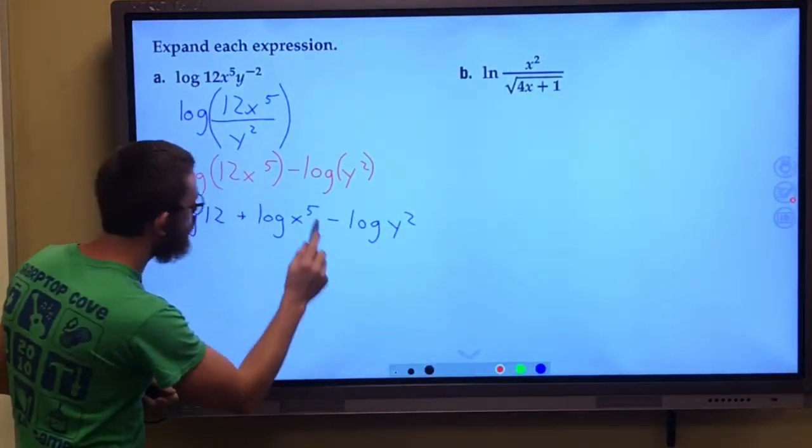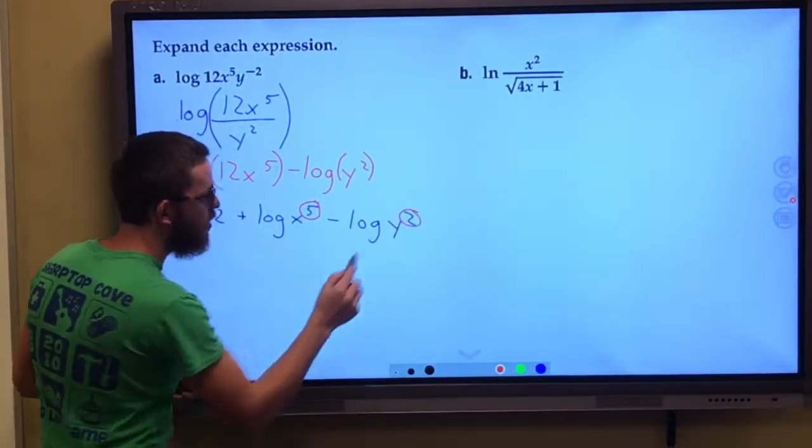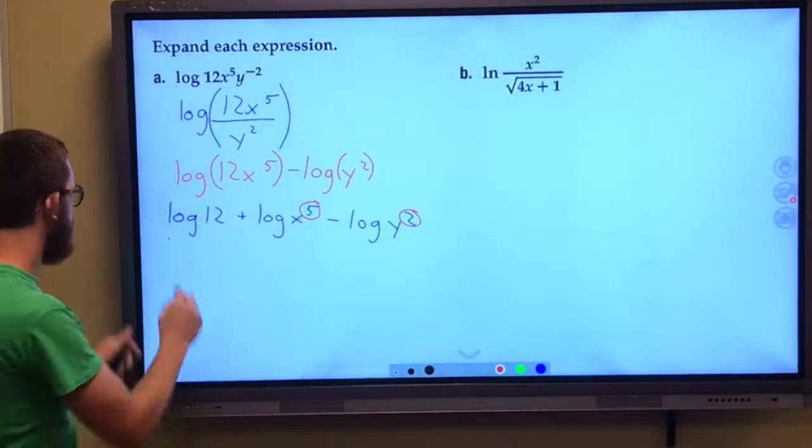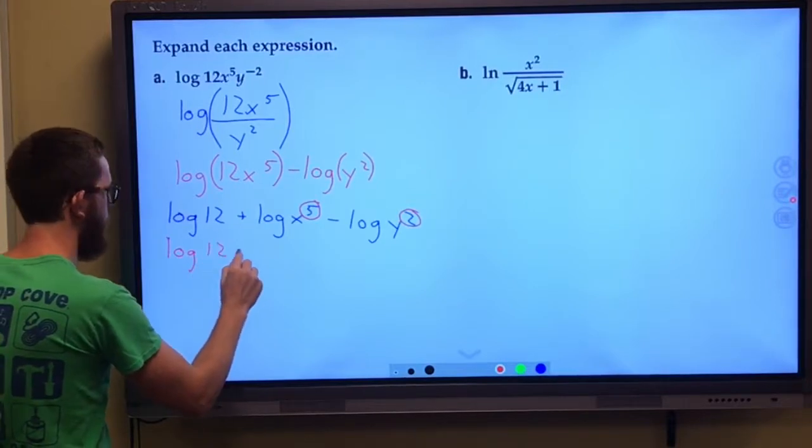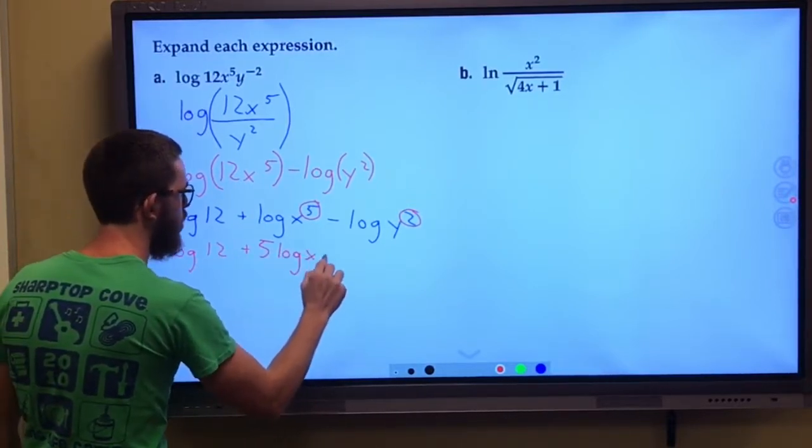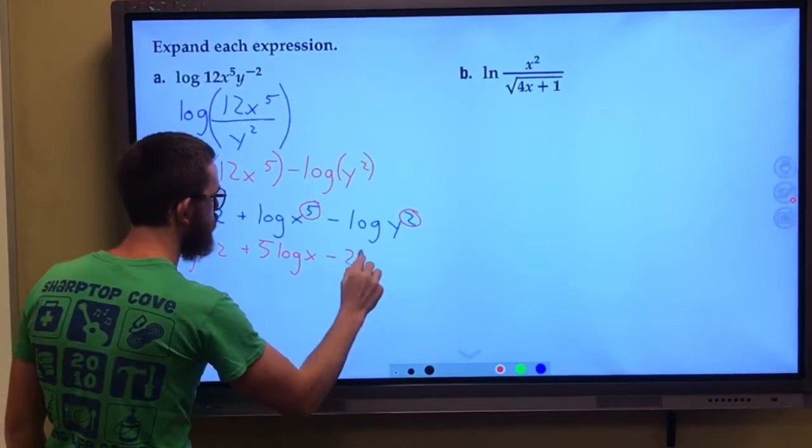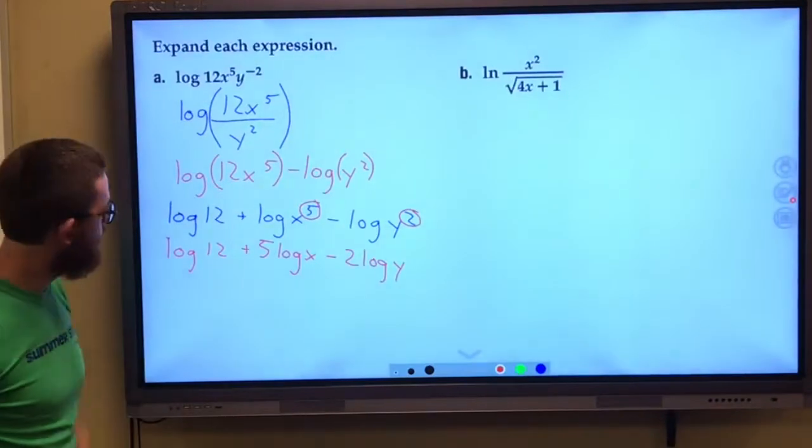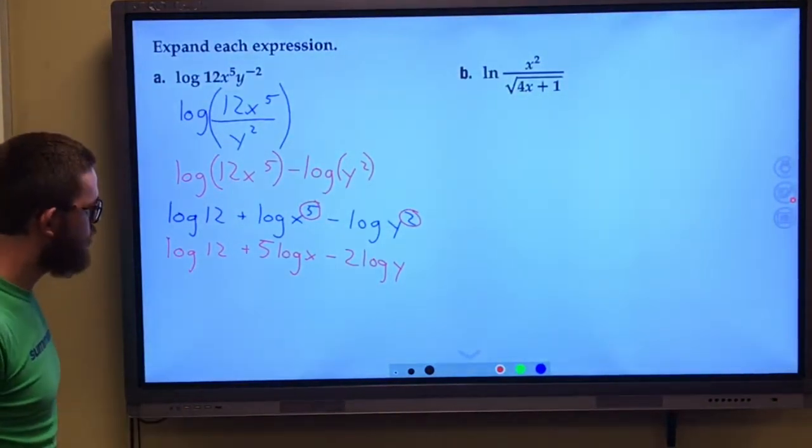And finally, notice we have exponents. And so we can use our power rule for those. We still have this log of 12 plus 5 log of x minus 2 log of y. So that looks pretty good there.